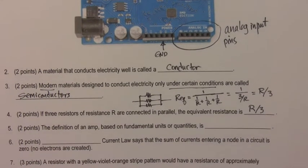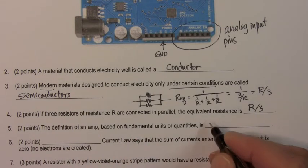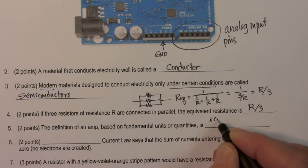Question number five. The definition of an amp based on fundamental units or quantities is one coulomb per second.